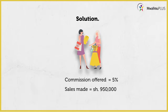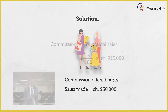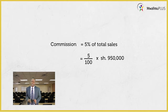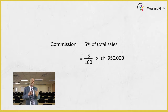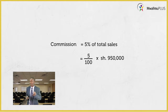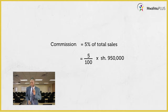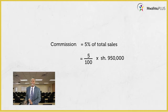We should understand that commission is actually 5% of the total sales. What do we do with this 5% commission? We convert that percentage into a fraction. Per cent means out of 100, so I'm going to take 5 out of 100 and then multiply by the sales made. That is 5 out of 100 times 950,000 shillings.